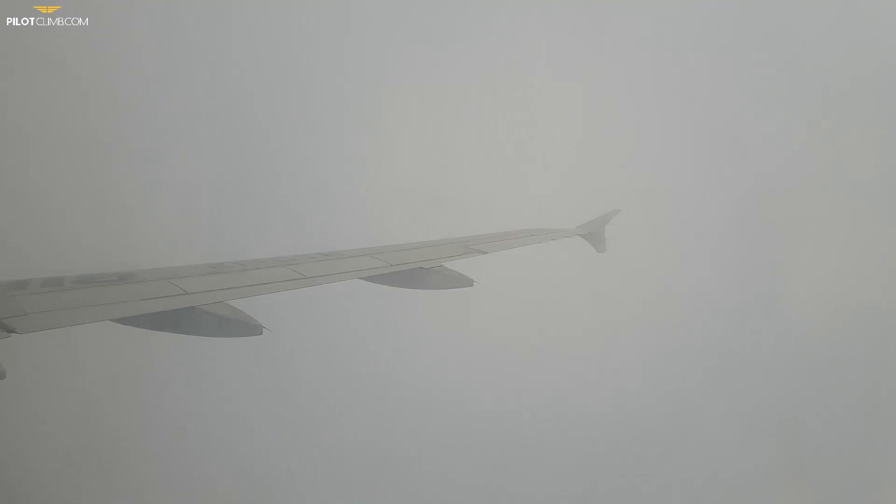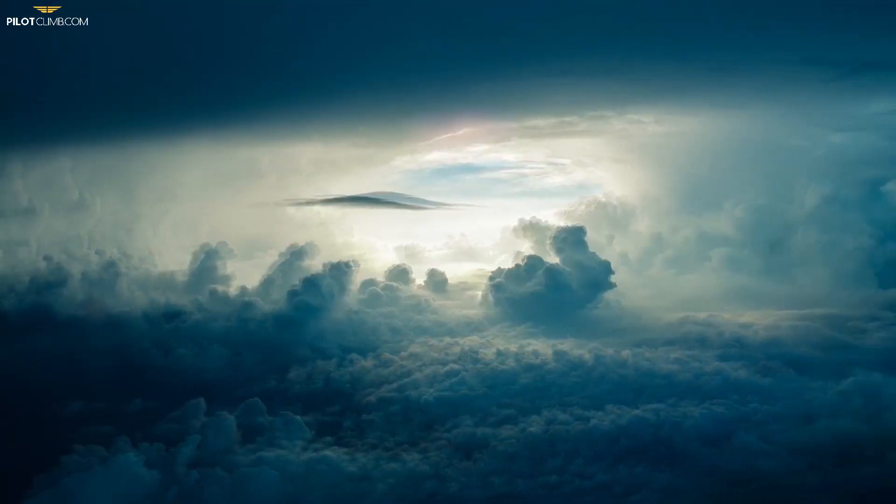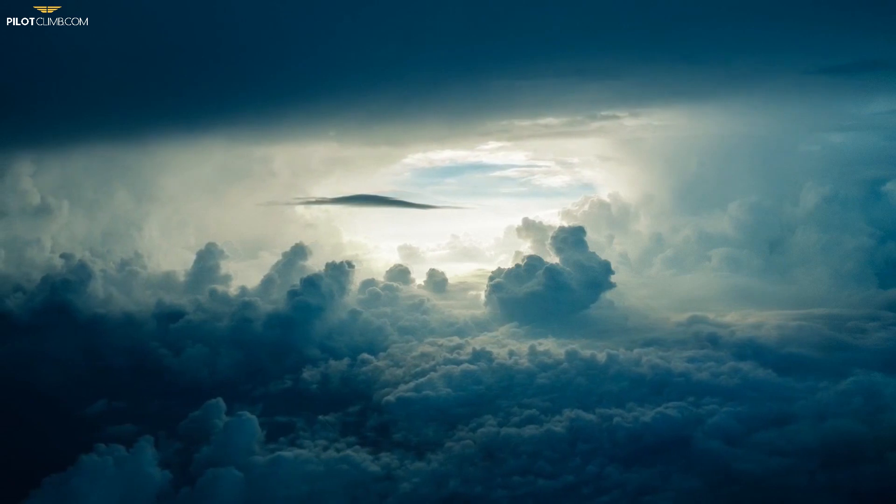In the air, the same conditions apply. If you take off and enter a cloud with temperature at 10 degrees or below, keep the engine anti-ice on until you have a static air temperature of minus 40 or below — at that very low temperature, ice accretion on the engine no longer applies. Some operators also require keeping anti-ice on even below minus 40 when flying near a CB, since that powerful cloud can still cause ice accretion.